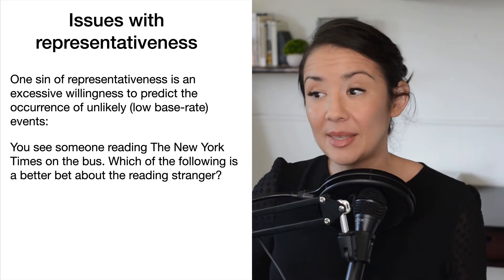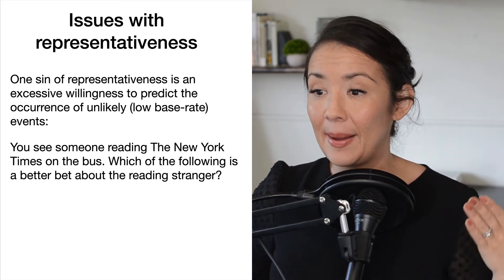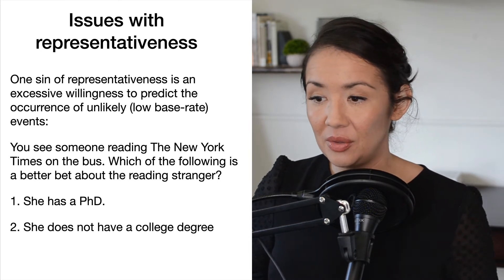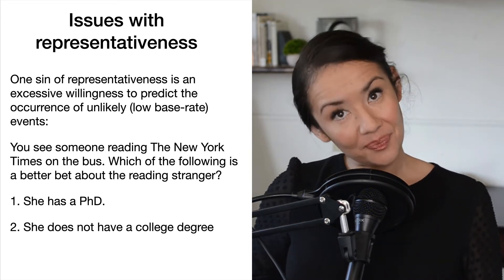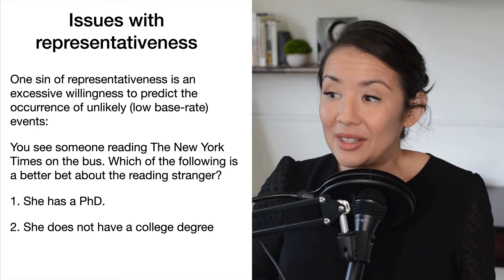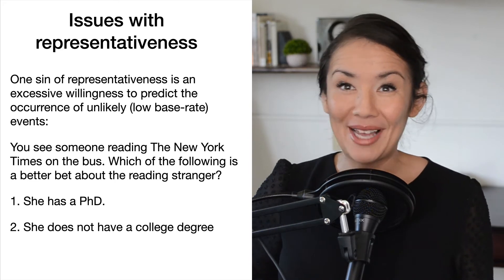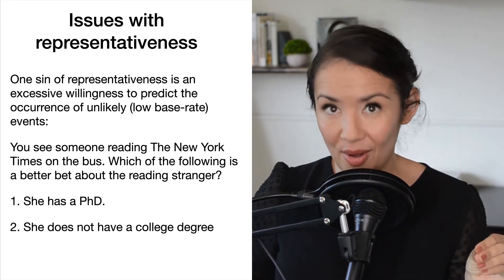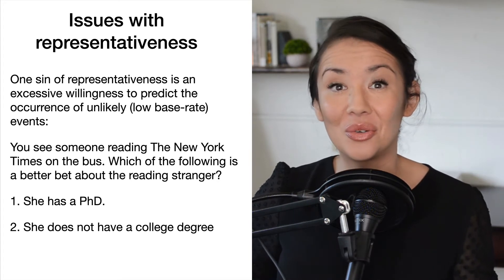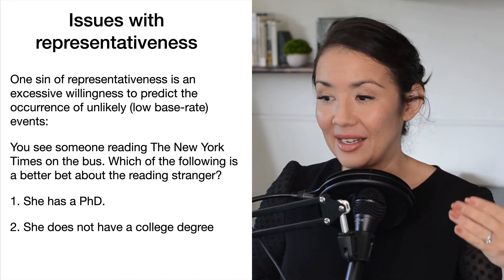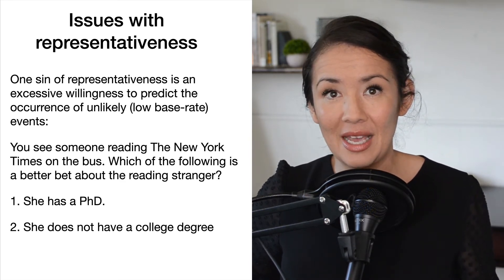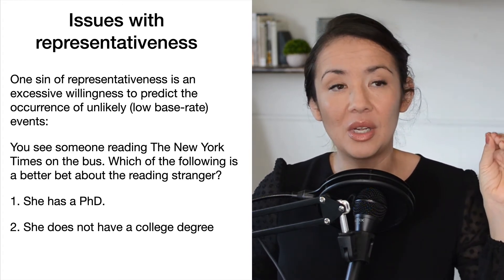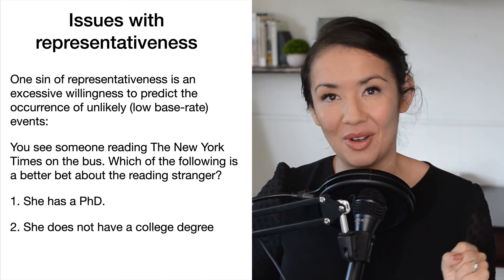Here's an example. You see someone reading the New York Times on a bus — which of the following is a better bet about the reading stranger? One, she has a PhD, or two, she does not have any college degree. If you're like most people, you would say people who read the New York Times are probably smart, they probably have a PhD. But the proportion of people who have PhDs is so much smaller than the population of people who do not have a college degree. So it's much more likely that she doesn't have a college degree and just happens to like the New York Times. But it seems to fit so nicely that she has a PhD and reads the New York Times that it's really hard to separate those two concepts in your mind.